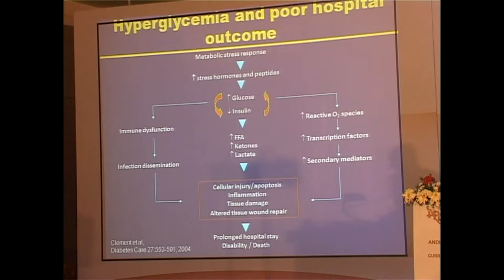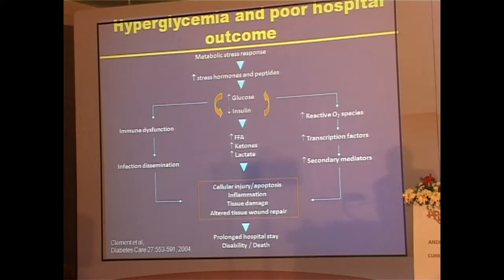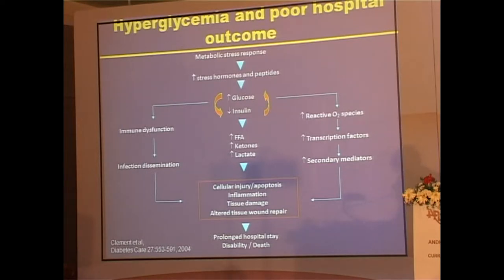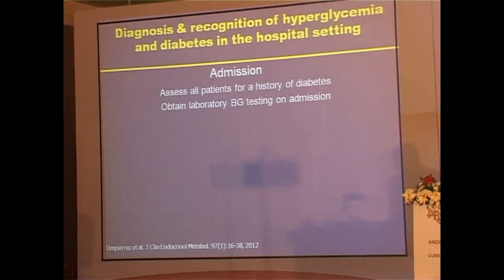When there is high glucose, the outcome of hospital care is poor. During metabolic stress, stress hormones and peptides go up, insulin goes down, glucose goes up, you get excess free fatty acids, ketones, and lactate. You get immune dysfunction, disseminated infection, redox and oxidative stress, transcription factors, secondary mediators, apoptosis, injury, inflammation, prolonged hospital stay, disability, and death — so you really cannot ignore it.